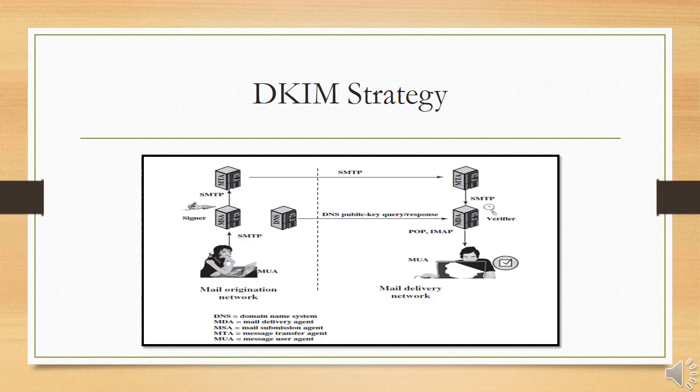The figure here is a simple example of the operation of DKIM. We begin with the message generated by a user and transmitted into the MHS to an MSA within the user's administrative domain. An email message is generated by an email client program. The content of the message plus selected RFC 5322 headers is signed by the email provider using the provider's private key. The signer is associated with the domain, which could be a corporate local network, an ISP, or a public email facility such as Gmail. The signed message then passes through the internet via a sequence of MTAs.